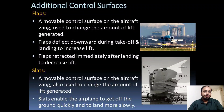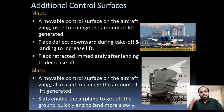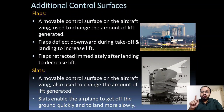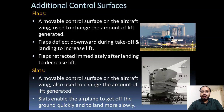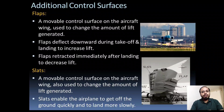Flaps are movable control surfaces on the aircraft wing used to change the amount of lift generated. Flaps are deflected downward during takeoff and landing to increase lift, and retracted immediately after landing to decrease lift. Slats are also a movable control surface on the aircraft wing that change the amount of lift generated. Slats generally enable the airplane to get off the ground quickly and to land slowly.